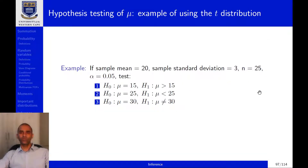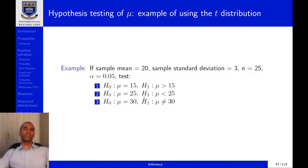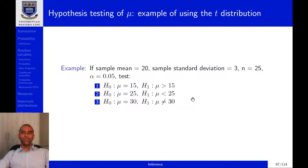Let's look at some examples to make this more concrete. We are given a sample mean of 20, standard deviation of 3, sample size of 25, and a significance level of 0.05. The null hypothesis is mu equals 15, and the alternative hypothesis is mu is greater than 15, so we know we're dealing with a right-tailed test.